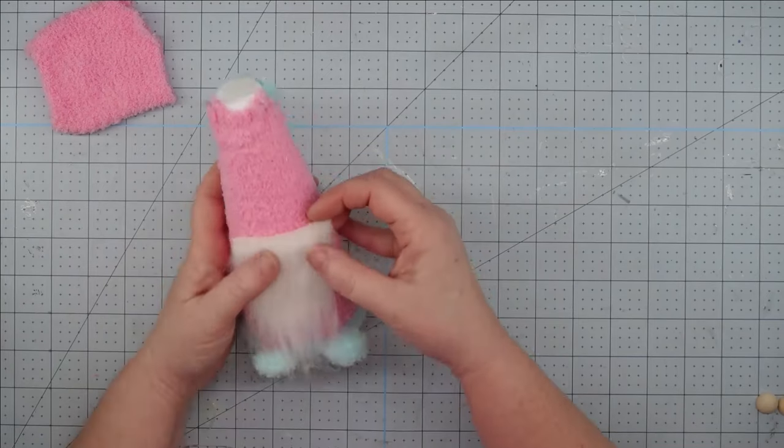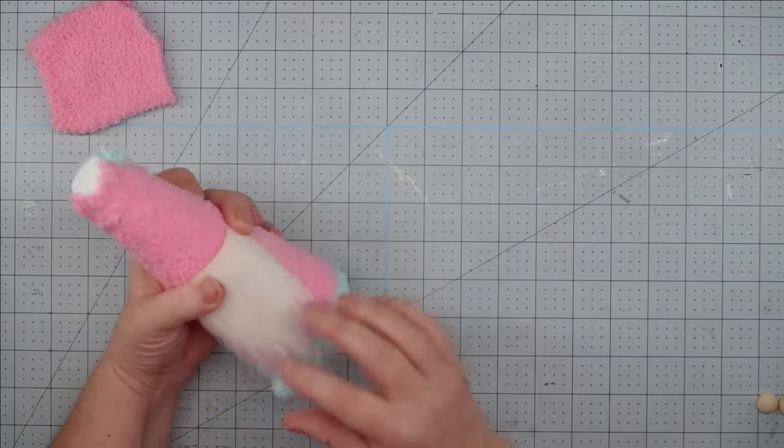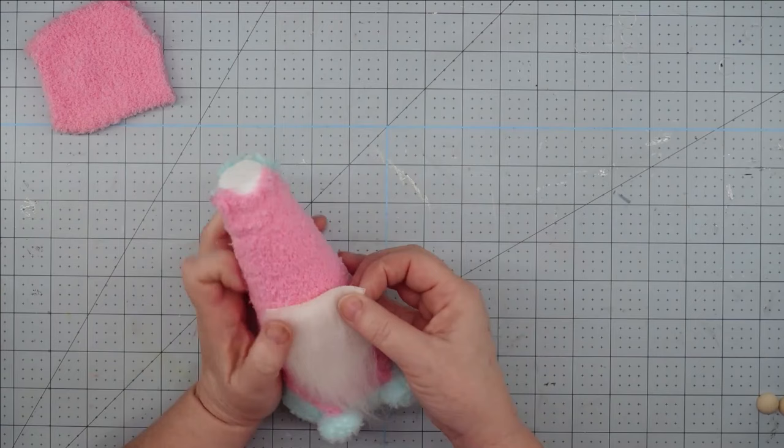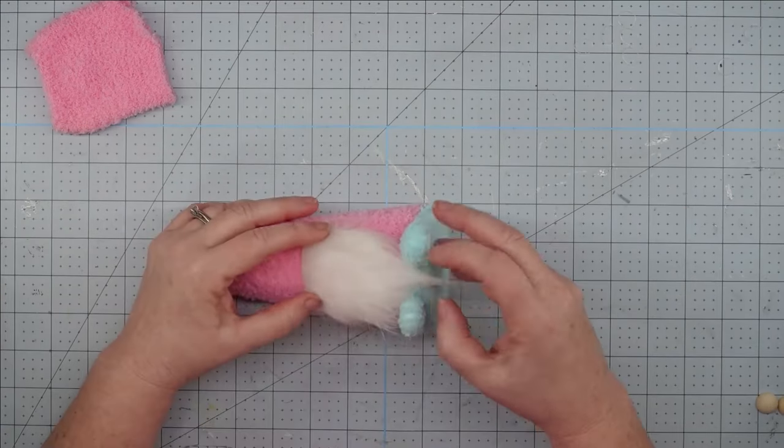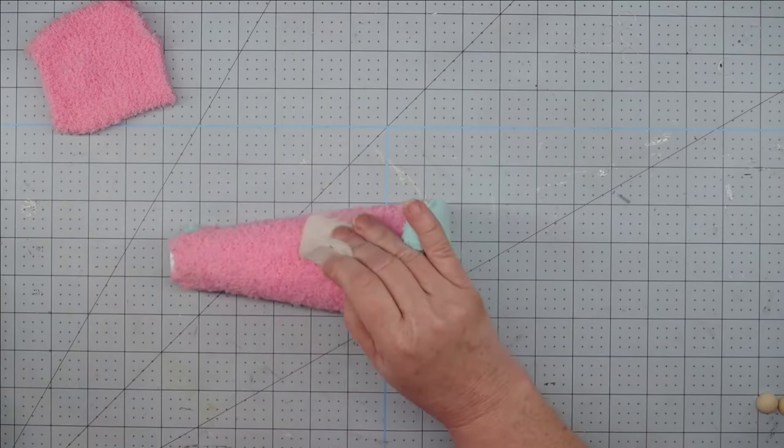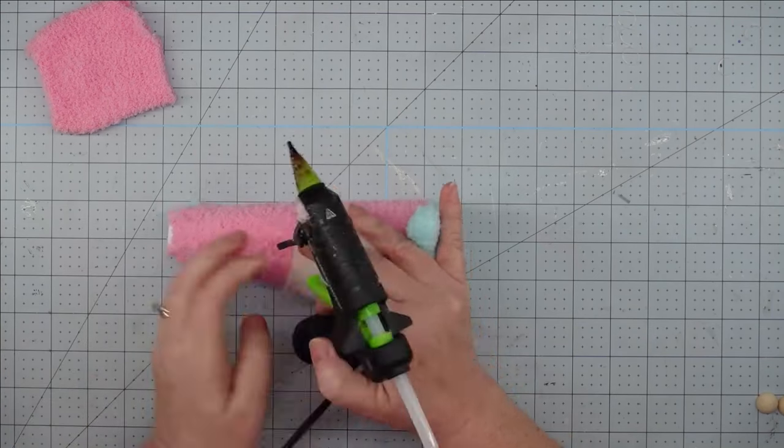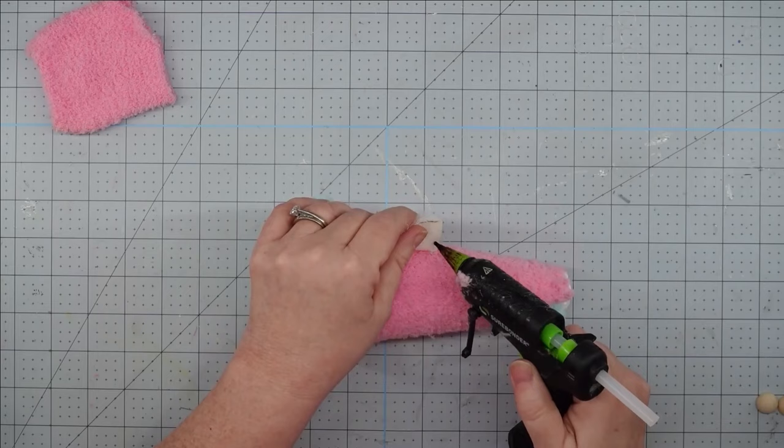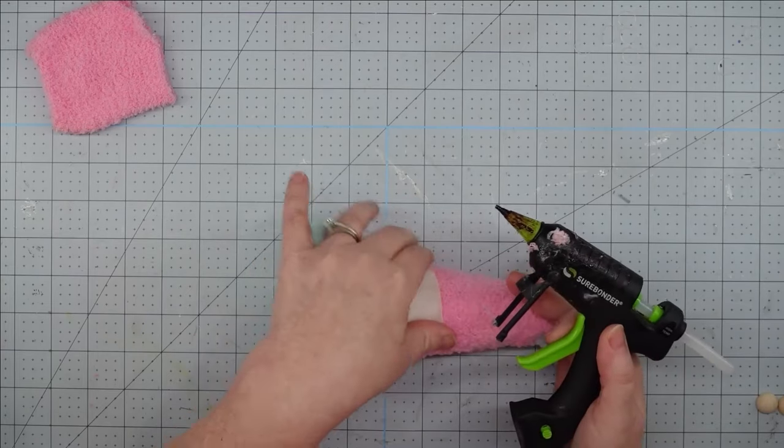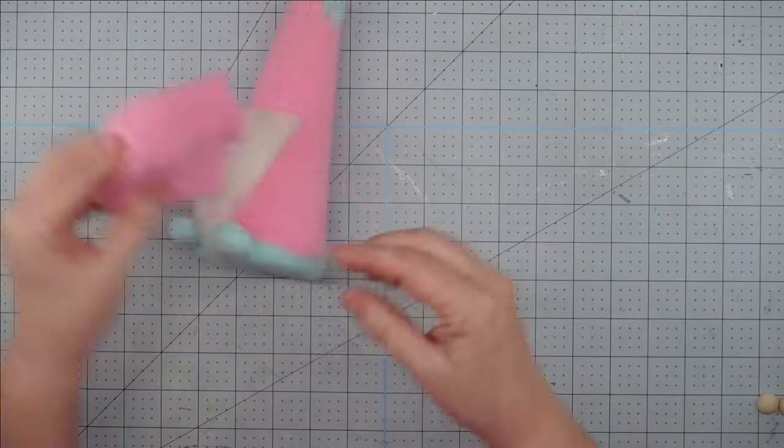Now, we can take our cone and figure out where you want this to be. I just kind of adjusted it so that the beard went all the way to the bottom, and once you're happy with the position, we're going to take a little bit of hot glue, put it at the top of your beard, and glue it down. Just make sure that you don't burn yourself.